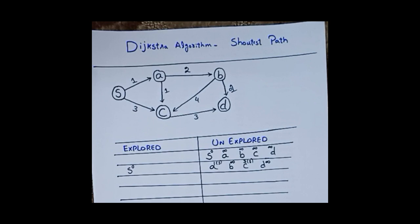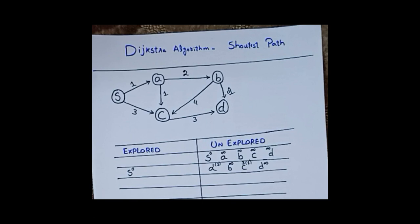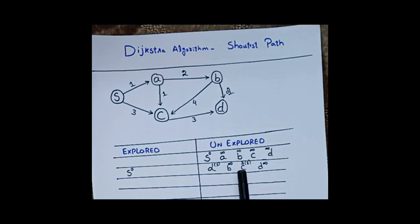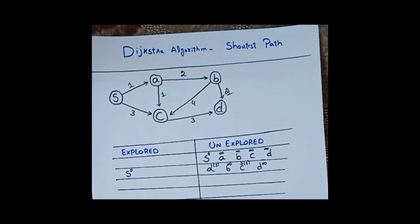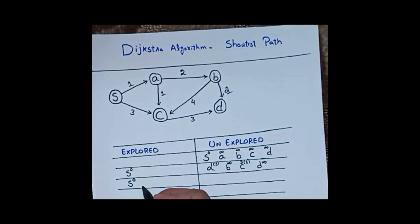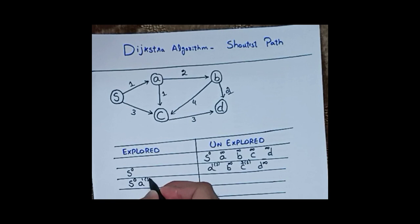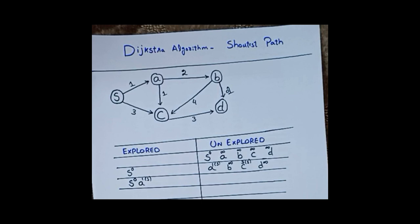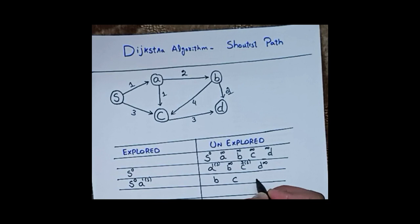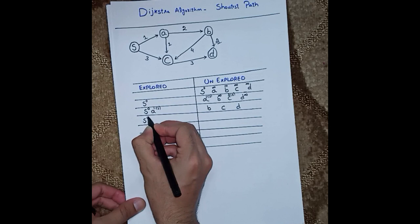Now, through all these unexplored nodes, which has the minimum distance? A is 1, B is infinity, C is 3, D is infinity. So A is minimum. I make A an explored vertex — the second explored vertex after S. A's distance is 1 and its parent is S. Now B, C, and D remain unexplored.